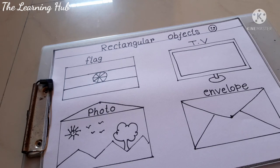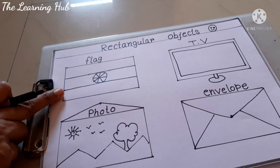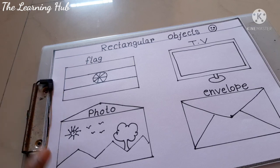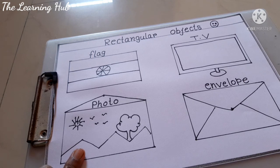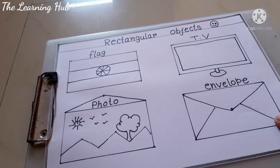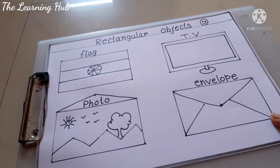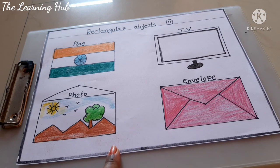Now children, look here. This is a national flag. This is a photo or photo frame. This is a television and this is an envelope. These are all rectangle in shape. You can also draw different rectangular objects like this, and I hope now you can recognize rectangle shape very nicely.